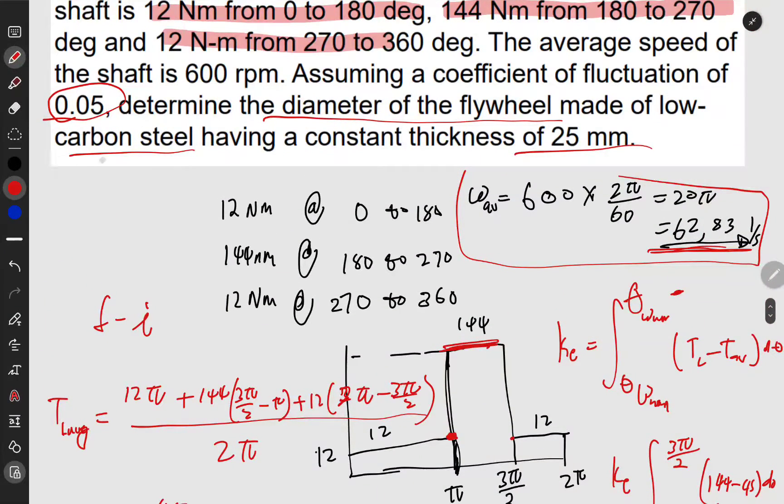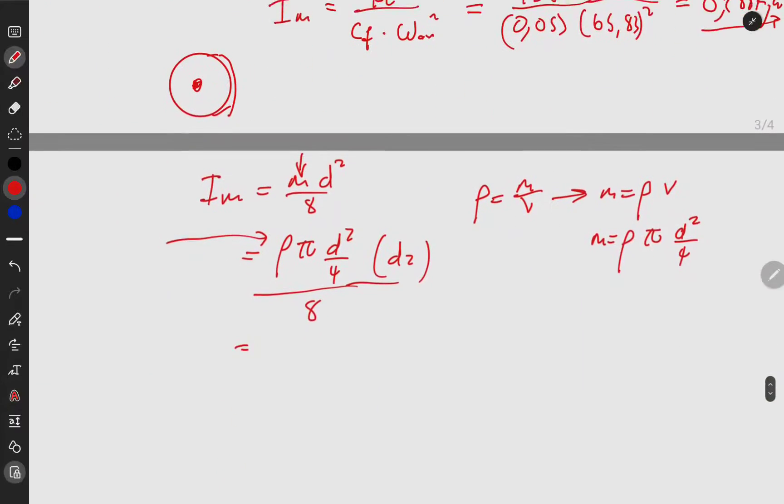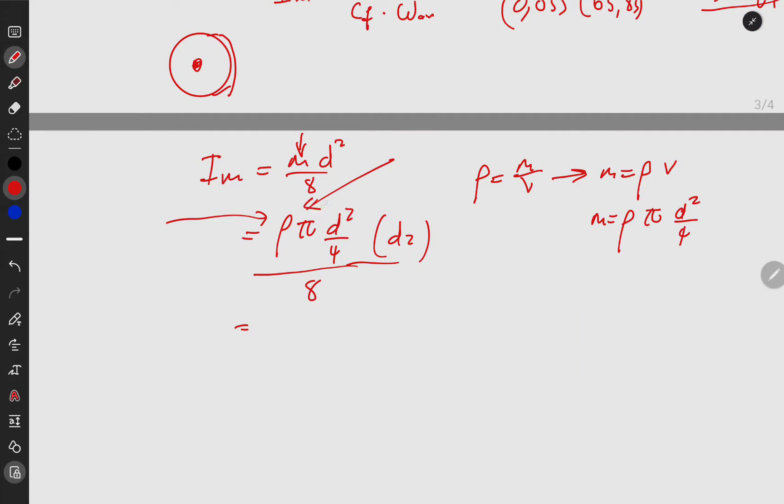I made a mistake—volume is area times thickness. We substitute mass in terms of d into the inertia formula: d²/4 divided by 8 times d² times density times thickness. The material is low-carbon steel—these properties are in your data tables.